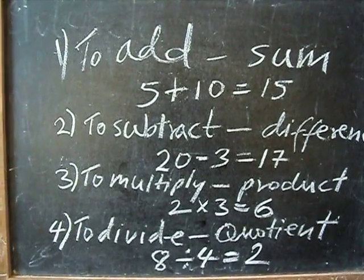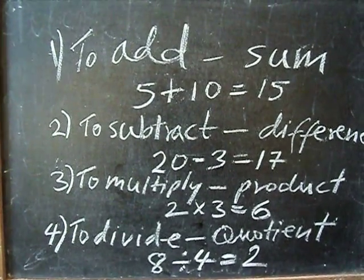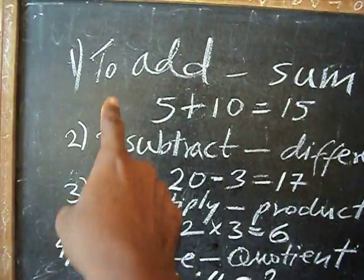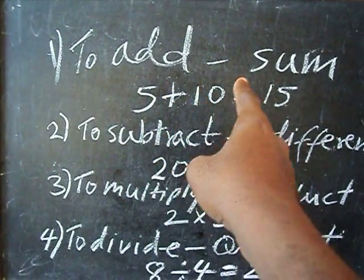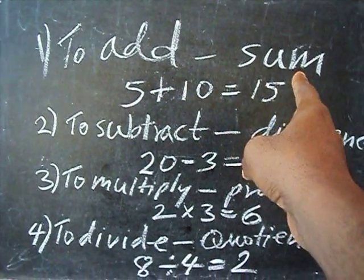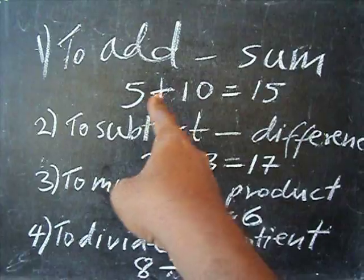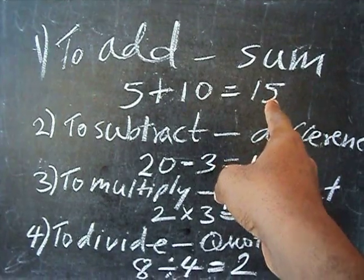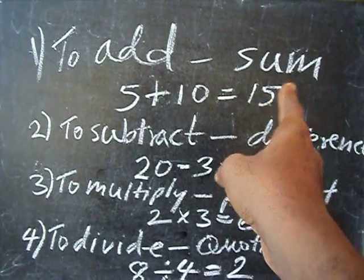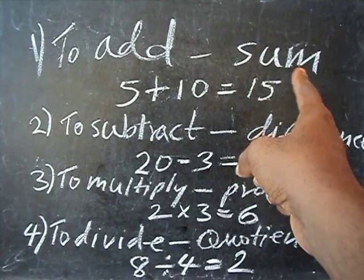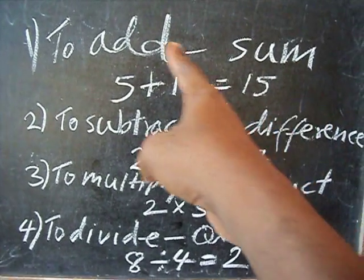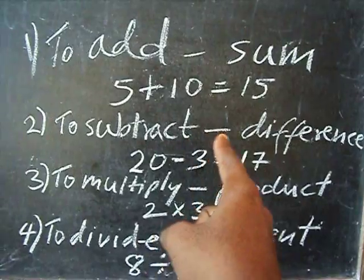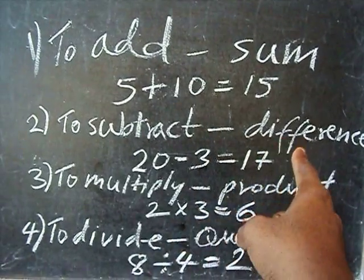Basic operations: number one, to add means to find the sum. For example, 5 plus 10 equals 15. When you find the sum of two numbers, you're supposed to add. To subtract means to find the difference.